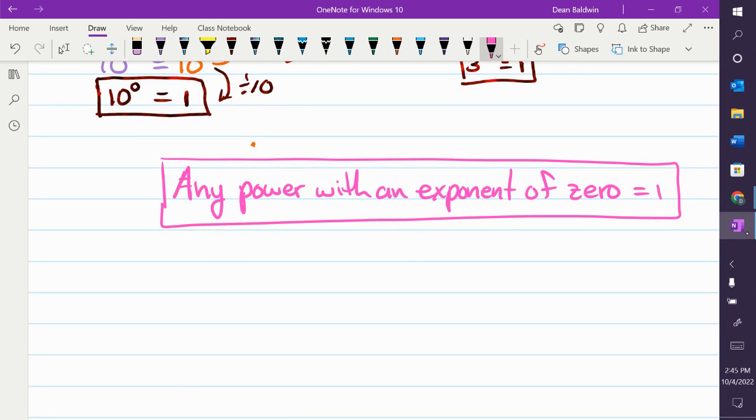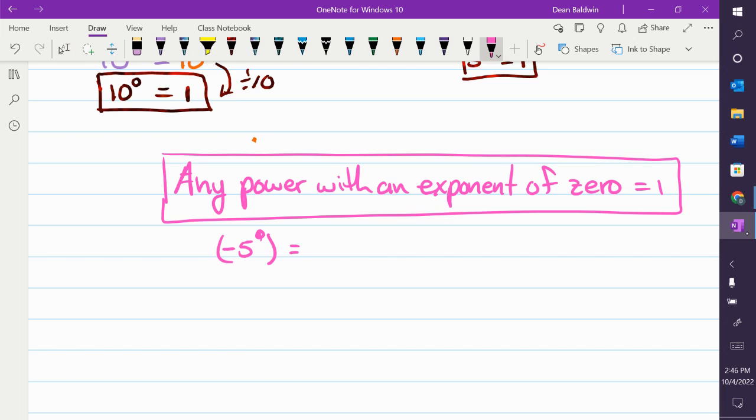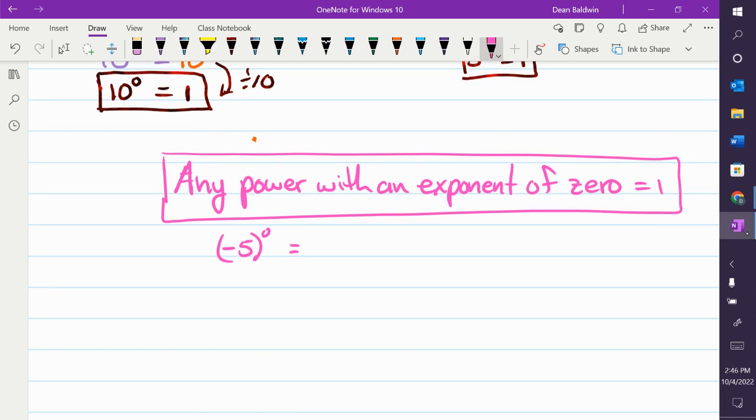So if you have negative 5 to the 0 power, what is that? What's your base? Negative 5, right? Because it's in brackets. Oh, sorry. The way I wrote it, you're right. It is 5. I meant to write it. There we go. Negative 5 to the 0 power is? 1.